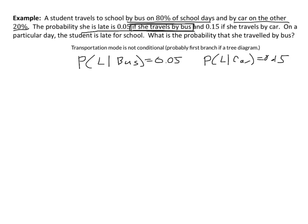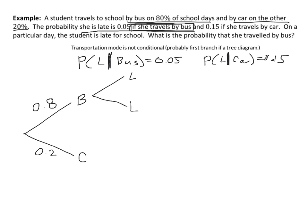Now that we've dissected this information, it makes sense to use a tree diagram because we see conditional probabilities. The first branch should be transportation mode — bus versus car. We can fill in probabilities: 0.8 for bus and 0.2 for car, both unconditional. The next branch is going to be late or not late, and the same thing for the car branch — late or not late.